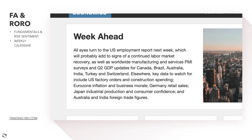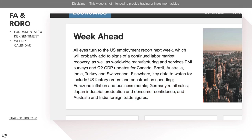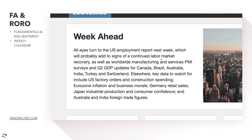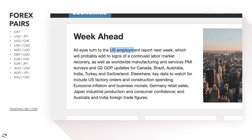Other key data to watch includes US factory orders and construction spending, eurozone inflation and business morale, Germany retail sales, Japan industrial production and consumer confidence, and Australia and India foreign trade figures. Even though we have a bank holiday here in the UK and markets may be quiet, the main data to watch towards the end of the week is US employment. It's really important for the US, especially if they're looking to taper and hike rates — that employment continues to grow.